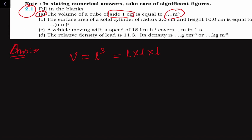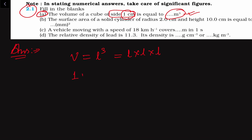We have to find the volume in meter cube, but we are given in centimeter, so we have to first convert centimeter into meter. We know that 1 centimeter is equal to 10 to the power minus 2 meter. The side of the cube is 1 centimeter, which equals 10 to the power minus 2 meter. Now using the formula V = l³, we get 10 to the power minus 2, whole cubed.